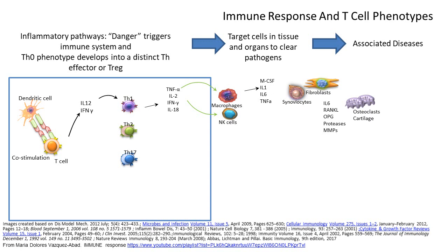In disease, the Th1 pathway is associated with typical inflammatory diseases. In rheumatology, examples include rheumatoid arthritis, psoriatic arthritis, and ankylosing spondylitis. Lupus also falls into this Th1 phenotype. For the skin, psoriasis is also characterized by a Th1 phenotype response.